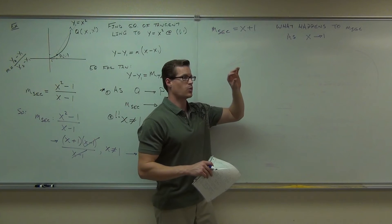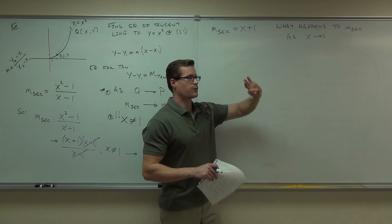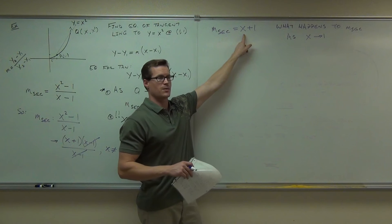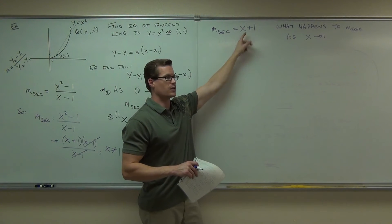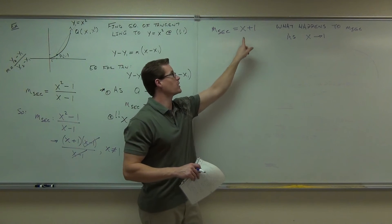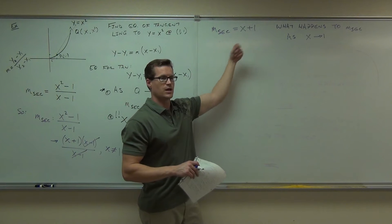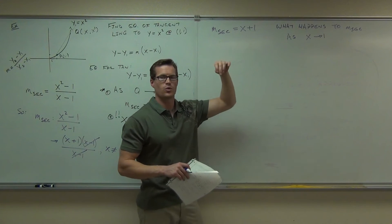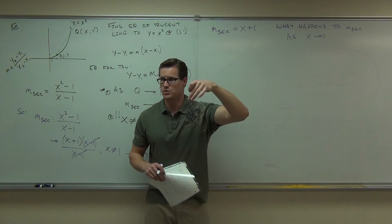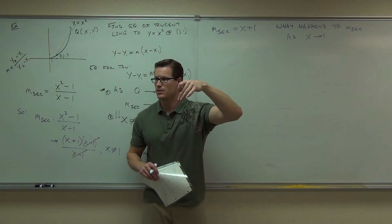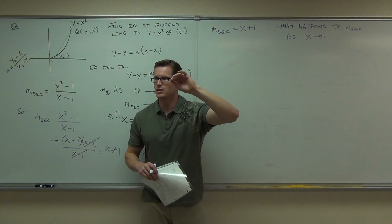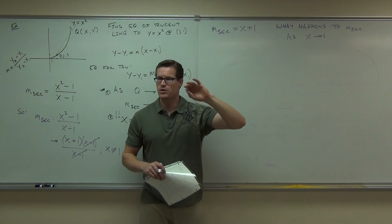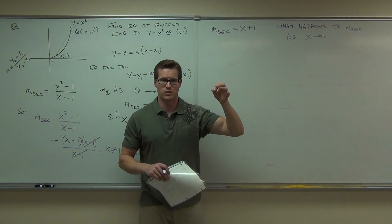Let's say we started at the point where x equals 4 — plug in 4, how much would you get? Now let's move it down to 3 — plug in 3, what would you get? Move it down to 2, how much would you get? Move it down to 1.5, how much would you get? 2.5. Move it down to 1.3, what would you get? Move it down to 1.1, what would you get?